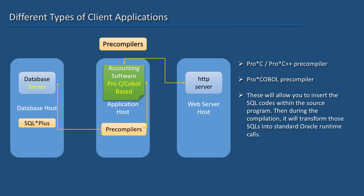Or, if you use Pro-C or Pro-C++, you can then use the Pro-C/C++ precompiler. This will allow you to insert SQL code within the source program. Then, during the compilation, it will transform those SQLs into standard Oracle runtime calls. If you use Pro-C, then you can use the Pro-C++ precompiler, which will do a similar function as described above.